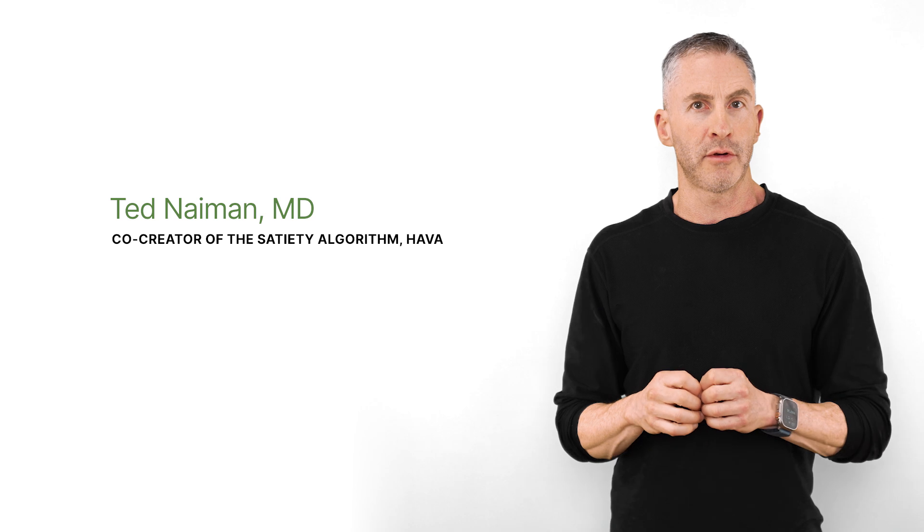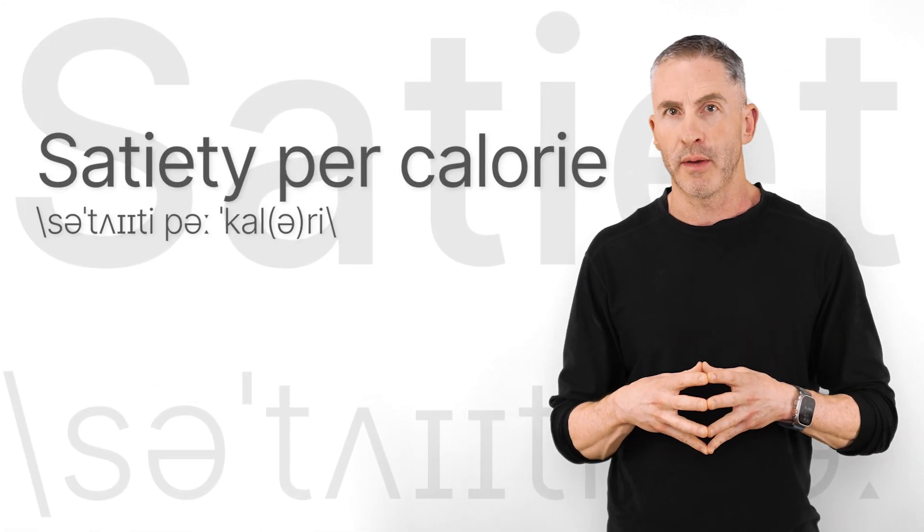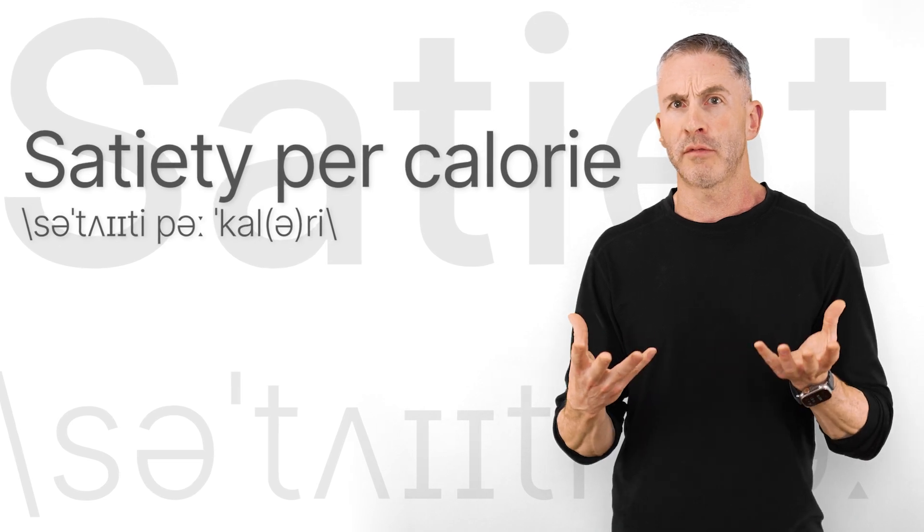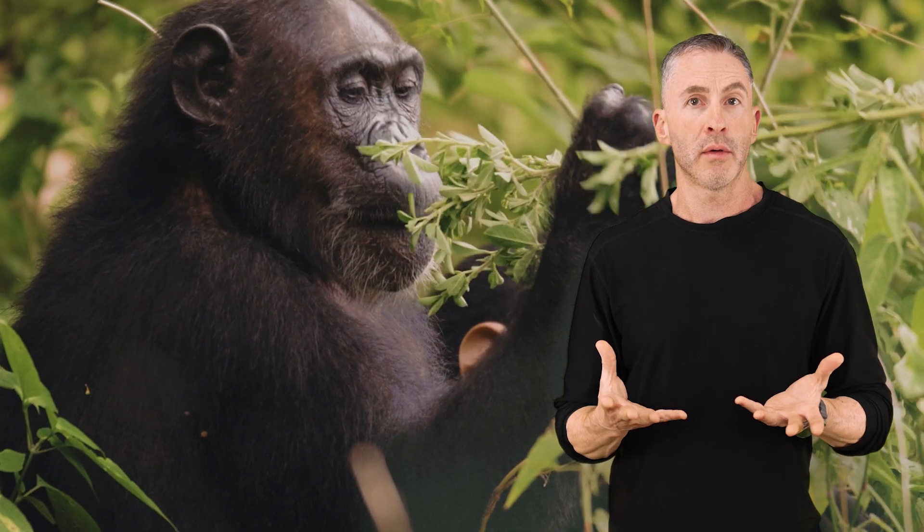Today I want to introduce everybody to a crucial concept: satiety per calorie. What exactly is satiety per calorie? Humans, like all animals, eat when we're hungry and stop when we're full, and this natural mechanism is how our bodies have always regulated food intake. Let's compare two radically different categories of people: those who are over-fat and insulin resistant, and those who are lean and insulin sensitive.